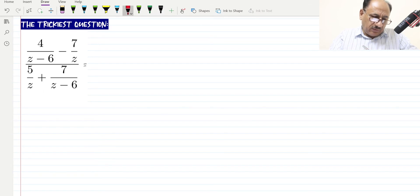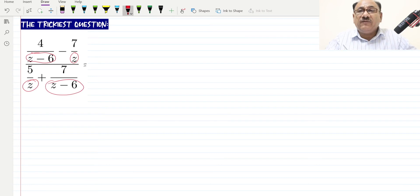Our first target is to get rid of these denominators like z and z minus 6. If we get rid of these fractions, our problems will be solved and our life will be easy. We can take this main fraction and put brackets.